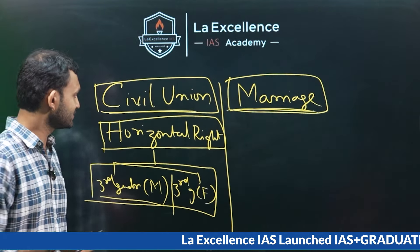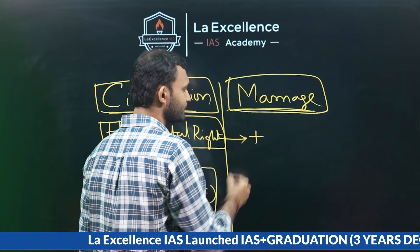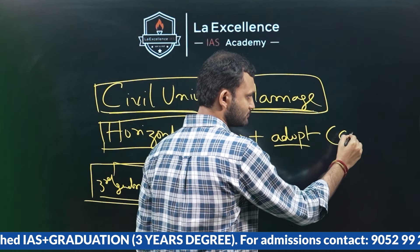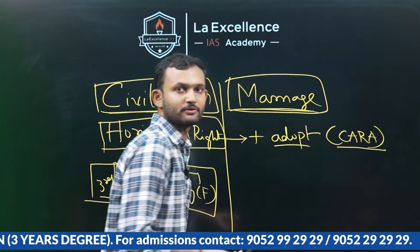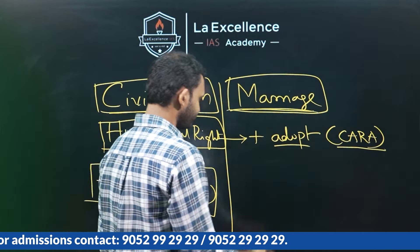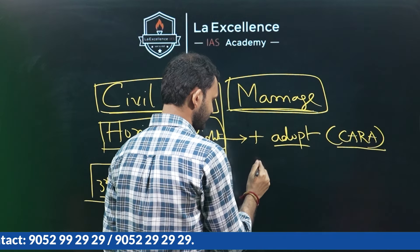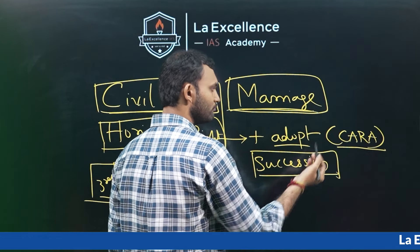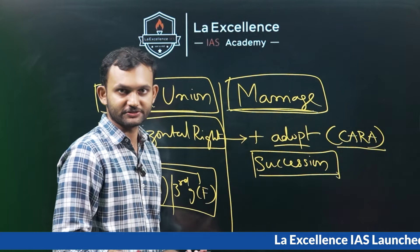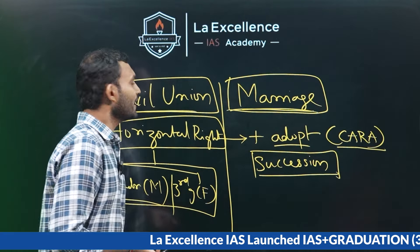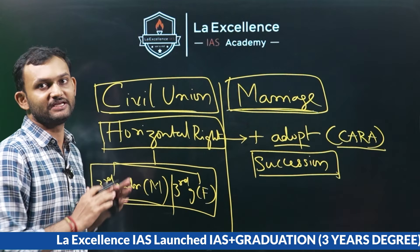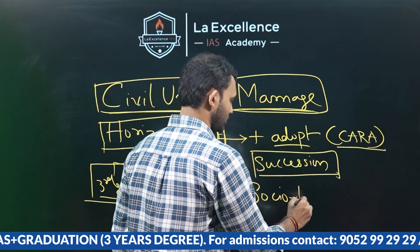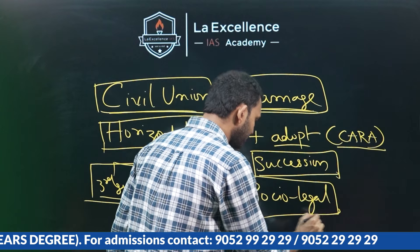When we understand this horizontal application, we need to understand the contrary part — what makes marriage distinct from a civil union and what extra rights are granted. As part of marriage, along with these horizontal rights, there is a right to adopt children as part of CARA and the Juvenile Justice Act. Along with adoption, we also have succession — meaning passing on inheritance to the next generation, whether biological children or adopted children. Also, civil union is just legal, not necessarily socially accepted, whereas marriage is socio-legal.